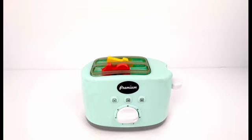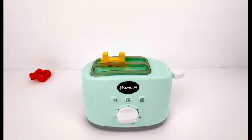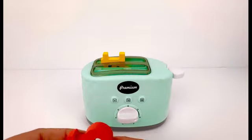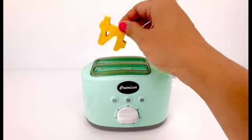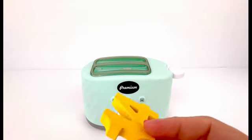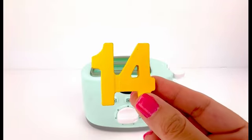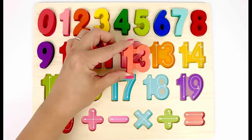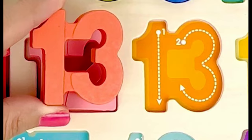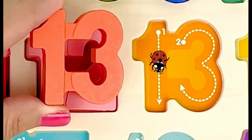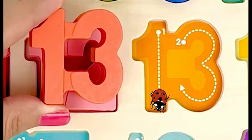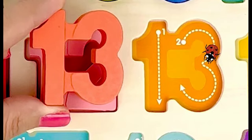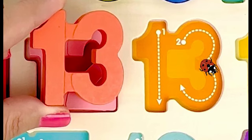I wonder what's inside that toaster. Whoa, two numbers! Number 13 is made of one and three next to it. Let's trace it.